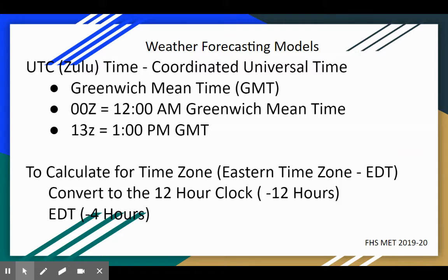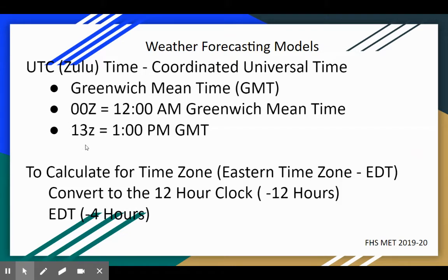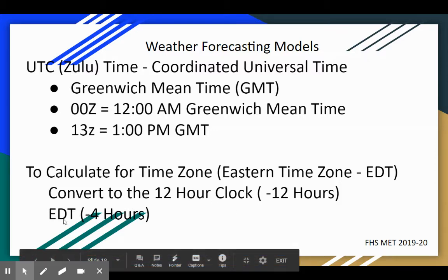00Z is 12 a.m. at the prime meridian, not here in Michigan. 13Z on a 24-hour clock is 1 p.m. at the prime meridian. To calculate for our time zone — eastern daylight time, which is in effect until November — we convert to a 12-hour clock by subtracting 12 hours from anything over 13Z, and then subtract 4 hours to get to eastern daylight time.